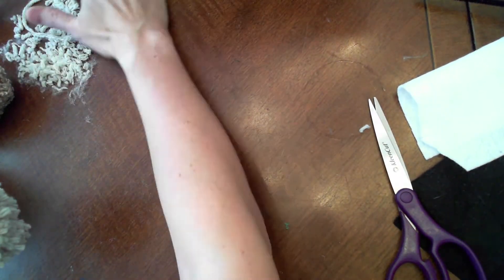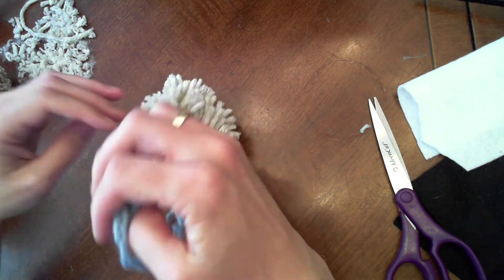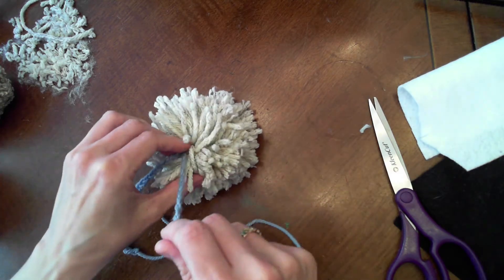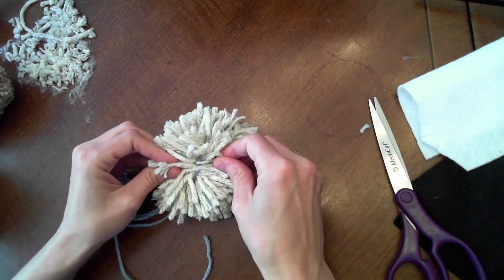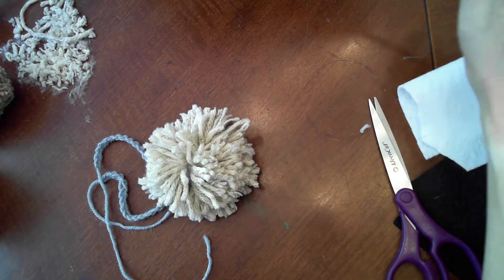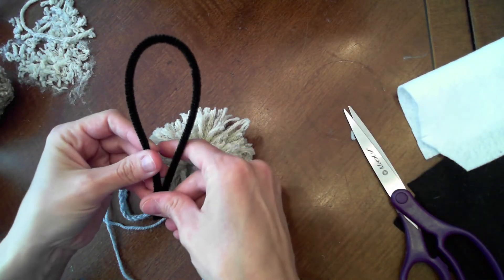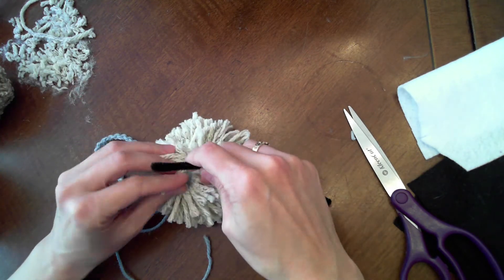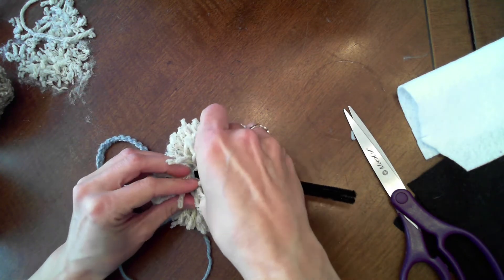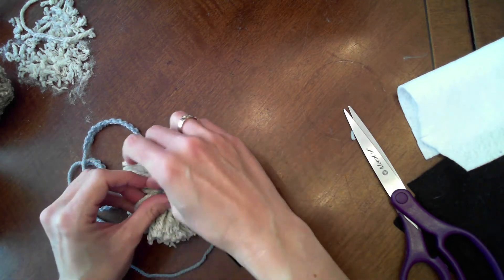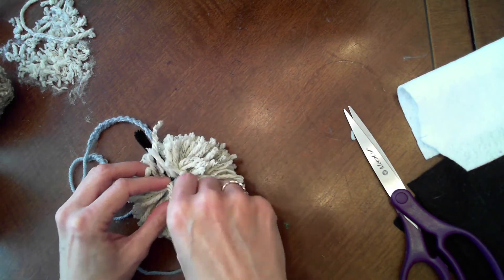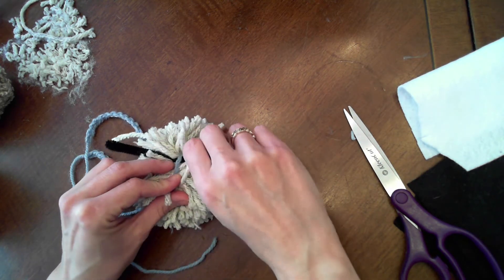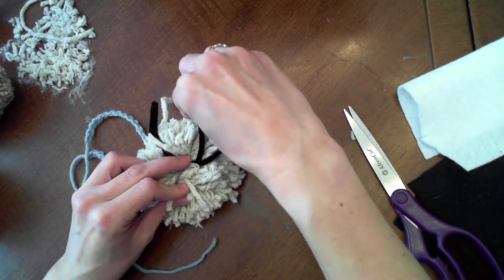The next thing I'm going to do is add the pipe cleaner legs. Wherever you tied the knot you're going to flip your ram over and we're going to put the legs on. I'm going to take a pipe cleaner and bend it in half and put it through and try to scoot it towards the front a little bit or towards one side of the pom-pom because that will be one set of feet going that way.